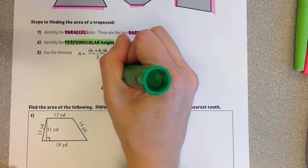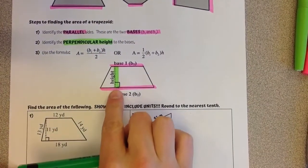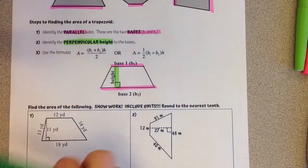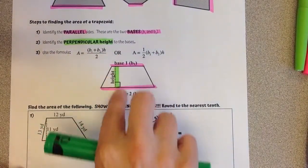That's our base 1 and base 2. Then we find the height that's perpendicular to those bases. Remember, it's at a 90 degree angle. It's not a slanted height, it's the perpendicular height.